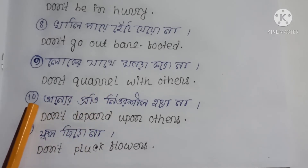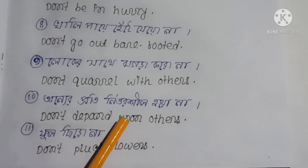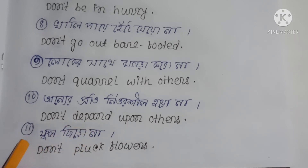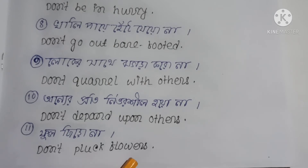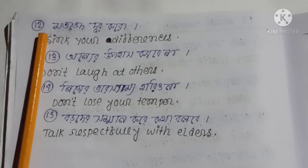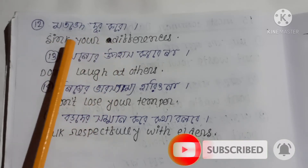Number 10: Don't depend upon others — অনেরর প্রতি নির্ভরশীল হইওনা। In English: 'Don't depend upon others.' Number 11: Don't pluck flowers — ফুল ছিঁড়োনা। In English: 'Don't pluck flowers.' 'Pluck' means ছেঁড়া বা তুলে নাওয়া, and 'Flowers' means ফুল।